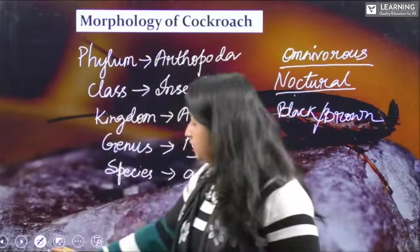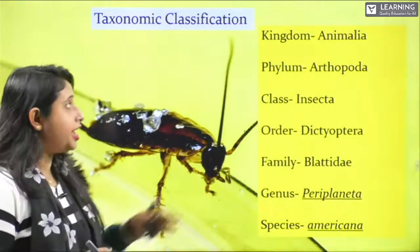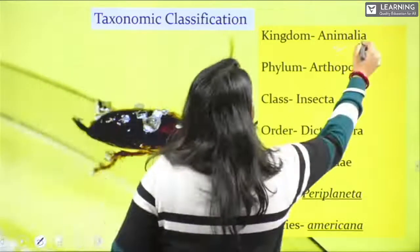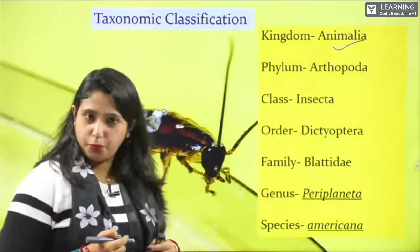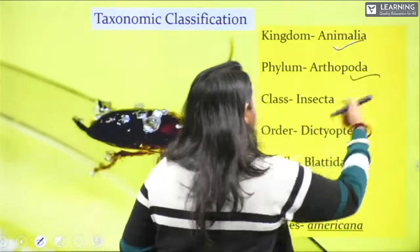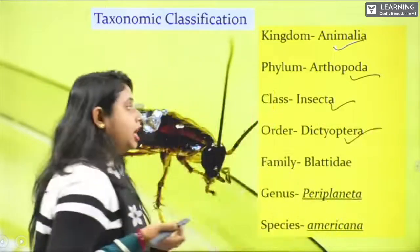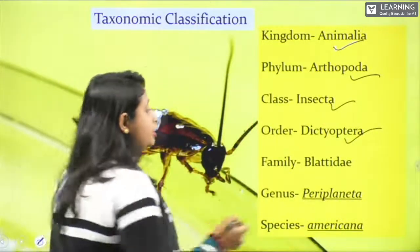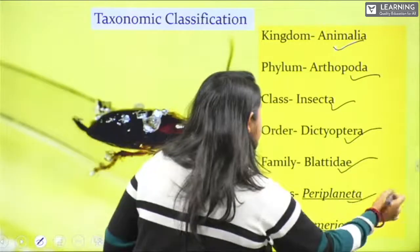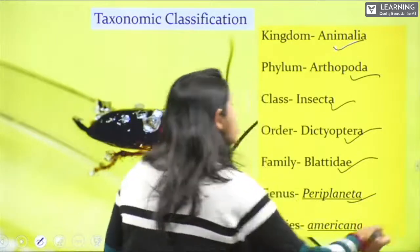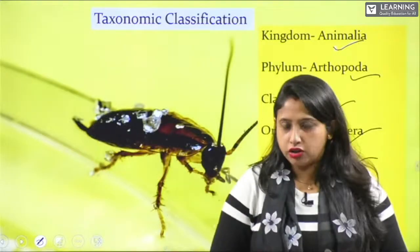The full taxonomic classification of the cockroach is: kingdom Animalia, phylum Arthropoda, class Insecta, order Dictyoptera, family Blattidae, genus Periplaneta, and species americana. These details you have to remember — this is the complete taxonomic classification of the cockroach.